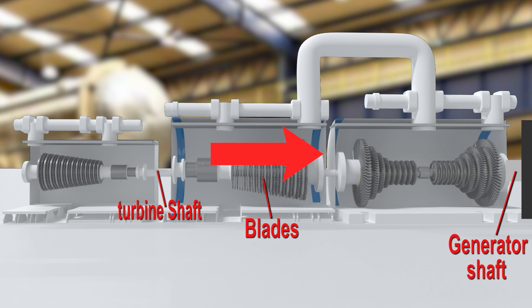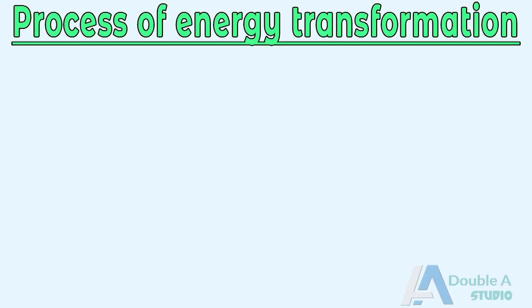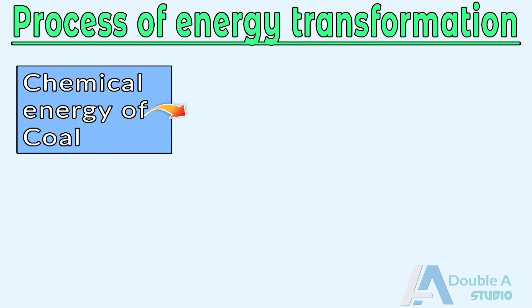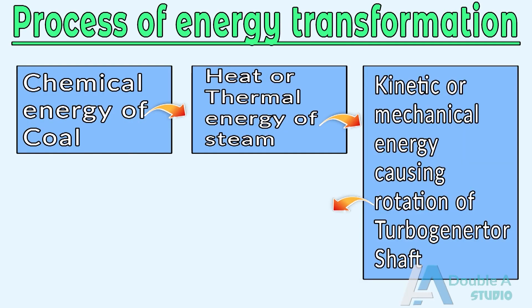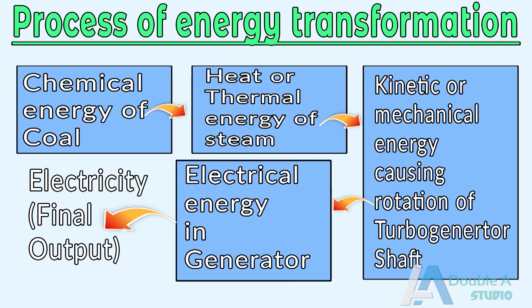As a result, the generator shaft coupled with the turbine shaft also starts rotating. The rotation of the generator rotor then converts this rotational energy into electrical energy.